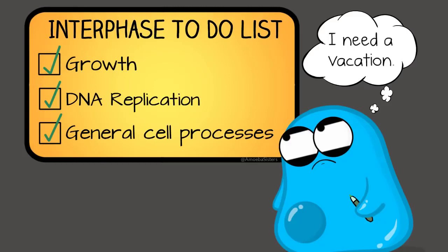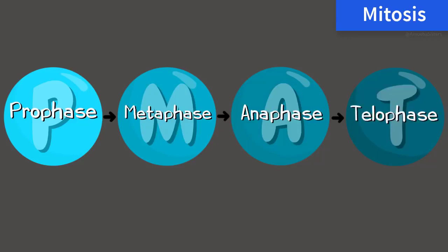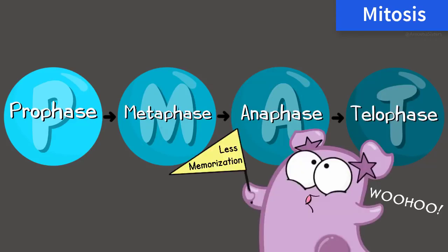Okay, so interphase checklist done. Now we can move into meiosis. You might remember the mitosis stages PMAT. The P was for prophase, the M was for metaphase, the A for anaphase, and the T for telophase. And the good news is that in meiosis you still use those terms.